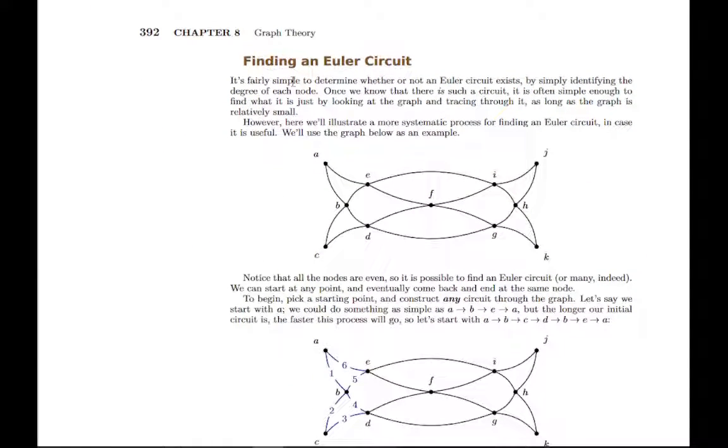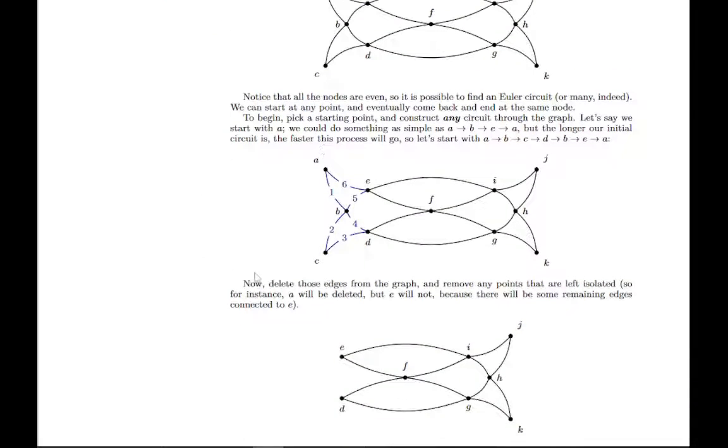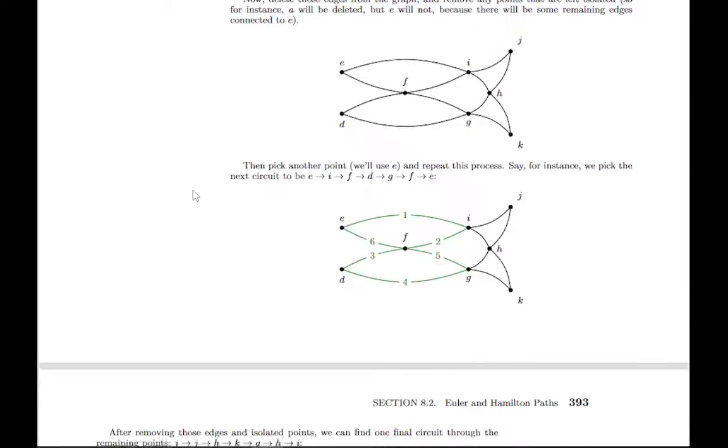There's a quick discussion of how to find an Euler circuit. If the graph is small enough, you can kind of just do it by trial and error, but this is a process you can follow if you want. For a really complicated graph, it basically breaks it into chunks and handles one at a time. I won't read through this in detail here, but you can go through, follow this example, and see how it works.